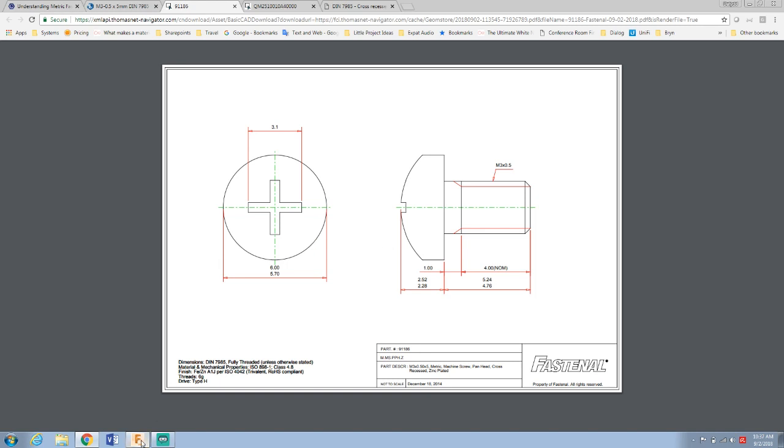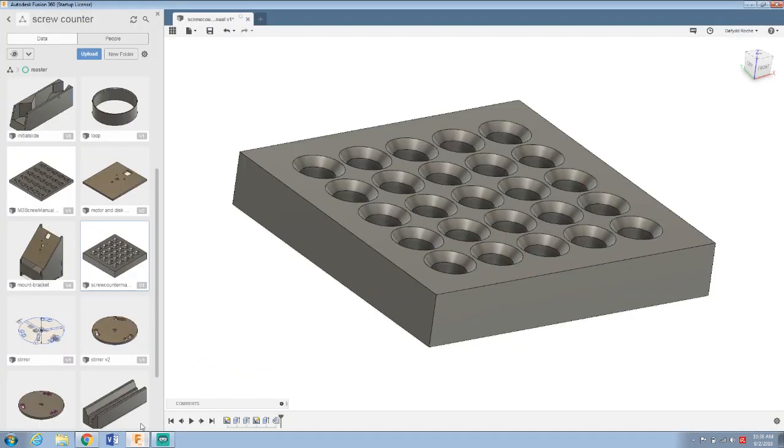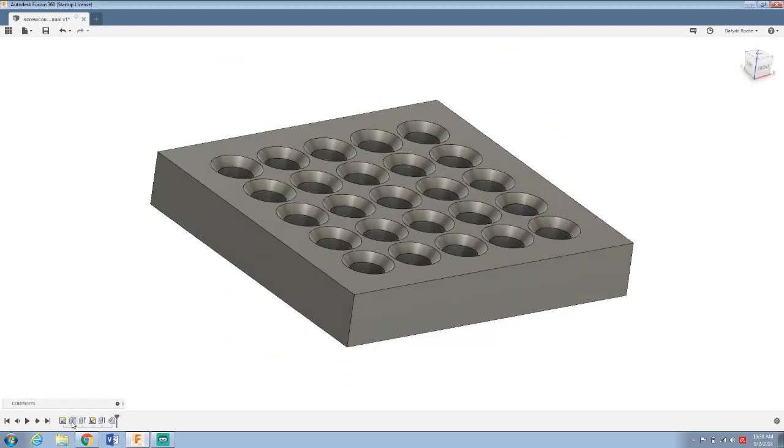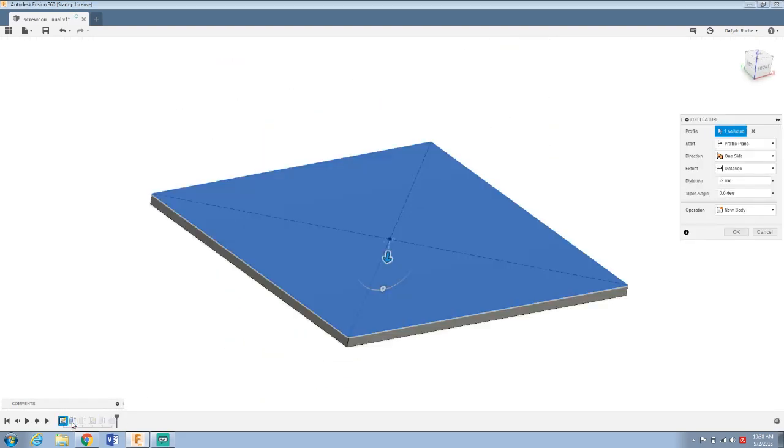So what I've done is I created my design in Autodesk Fusion 360. We started off just by defining a square which will be like what it's built into. And let's take it back to here. I extruded down 2mm just to give me a base so that the screws don't fall through.